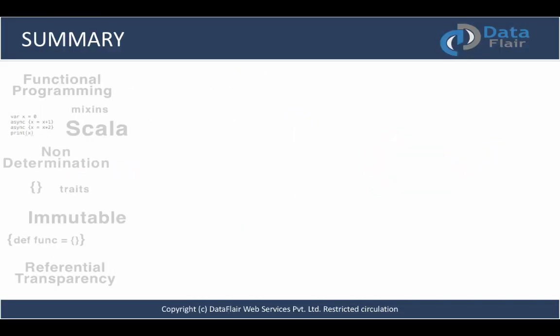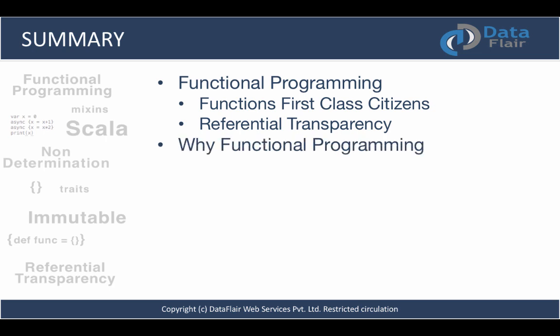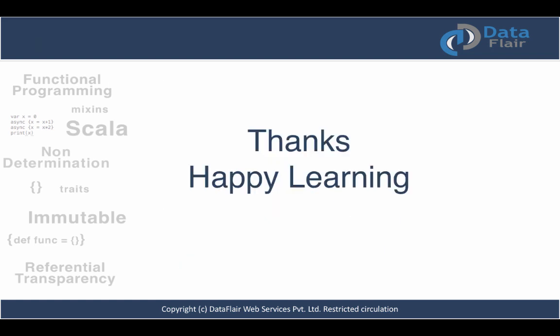That's it for this lecture. Let's summarize what we learned. We started with functional programming — what it is and when it all started. We covered the main ideas: functions as first-class citizens and referential transparency. We learned about why we would choose functional programming, relating immutability and scalability. Then we compared functional programming with object-oriented programming and how states can introduce complexities. I hope you enjoyed this lecture — see you until the next lecture, and happy learning!